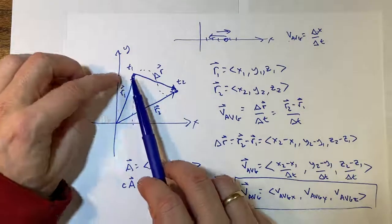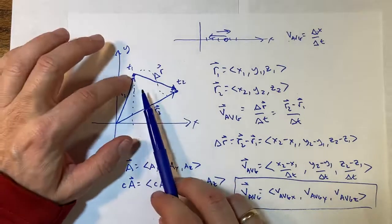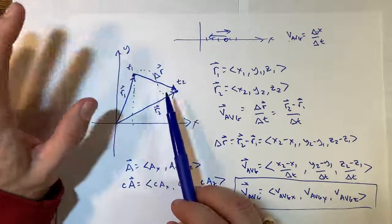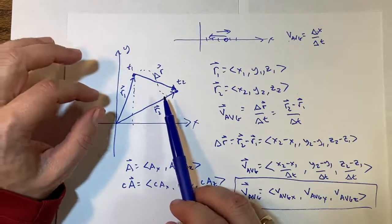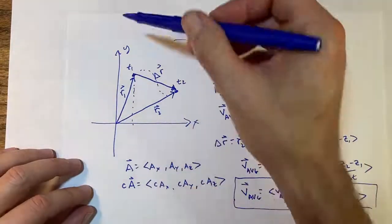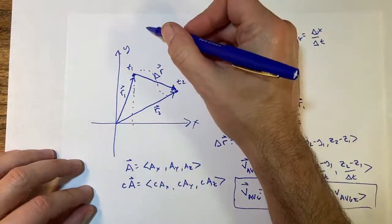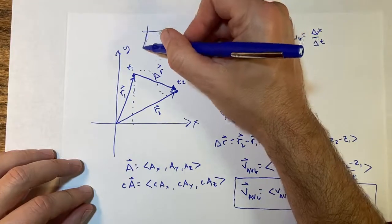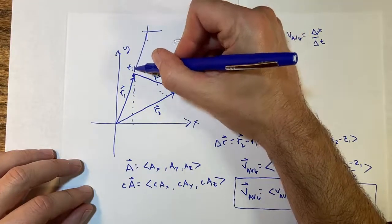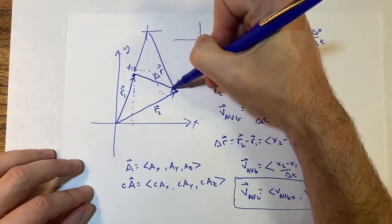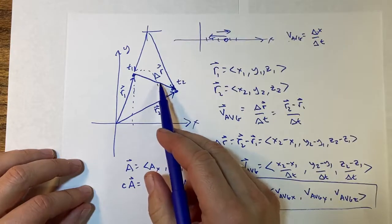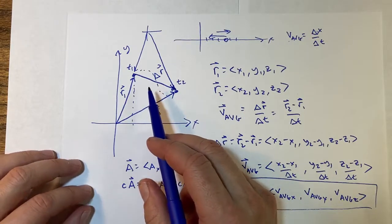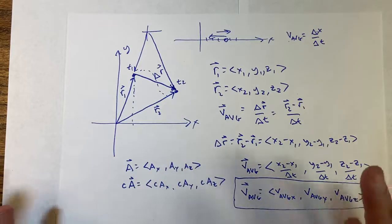If I know the initial and final position and times t1 and t2, I can calculate the average velocity as a vector. Notice that if I put my origin somewhere else, r1 and r2 change, but delta r is the same — delta r does not depend on where I put my origin. That's a good thing.